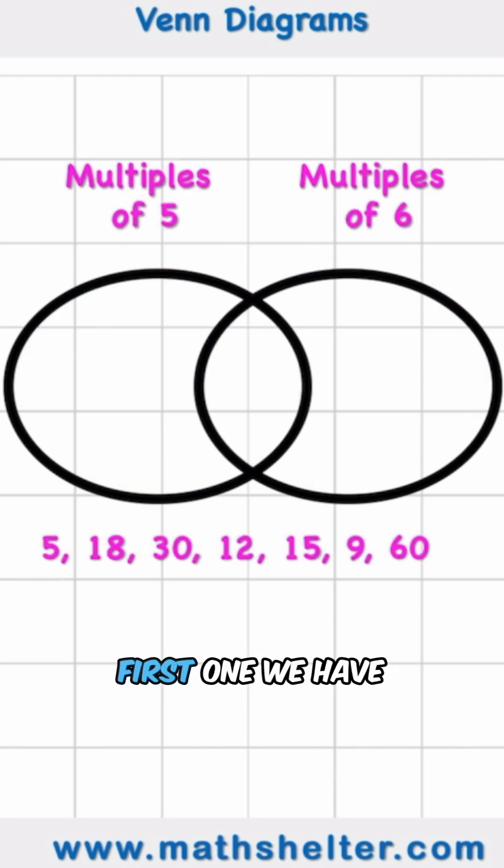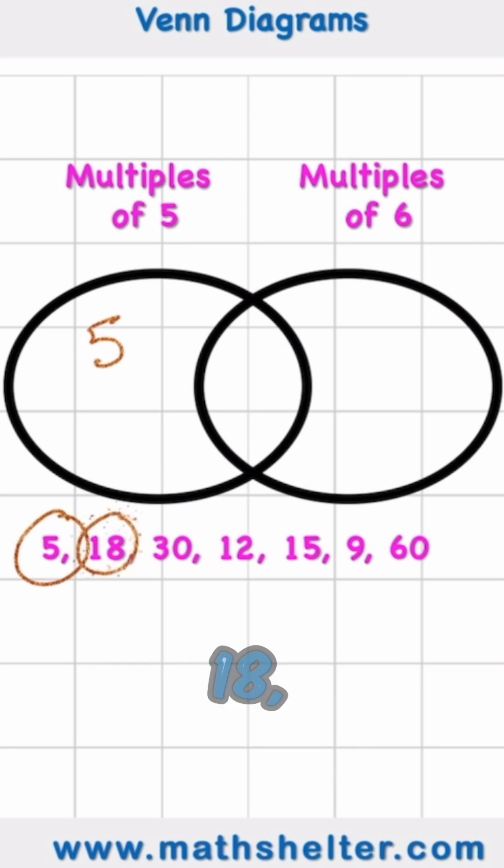So let's go. First one, we have the number 5. Well, 5 is obviously just a multiple of 5, it's not a multiple of 6, so I put it in circle A. Then I have 18. 18 is only a multiple of 6 and not a multiple of 5, so I put it in circle B.